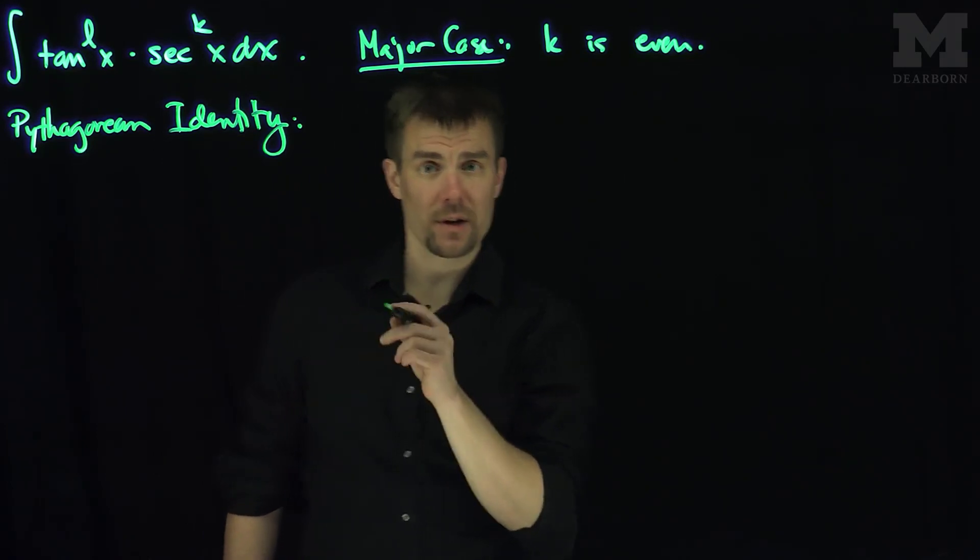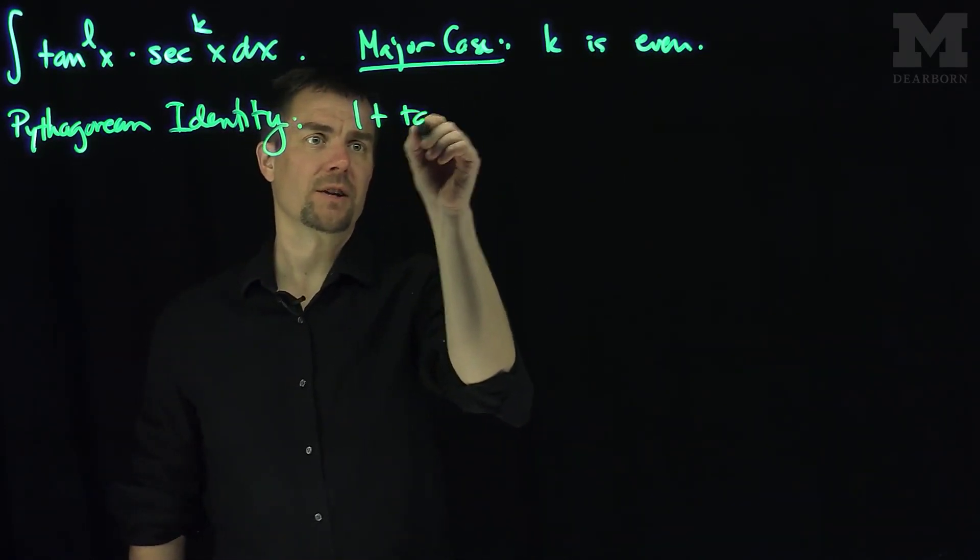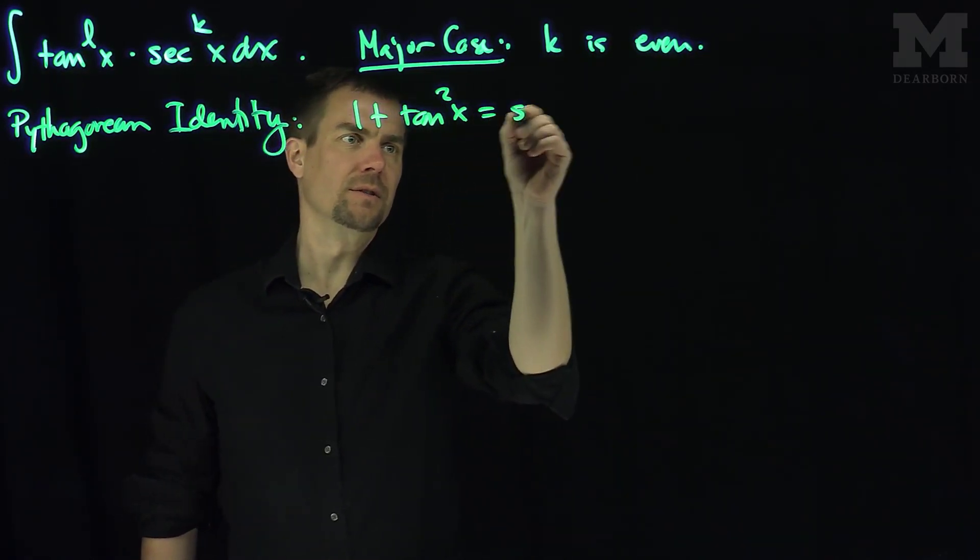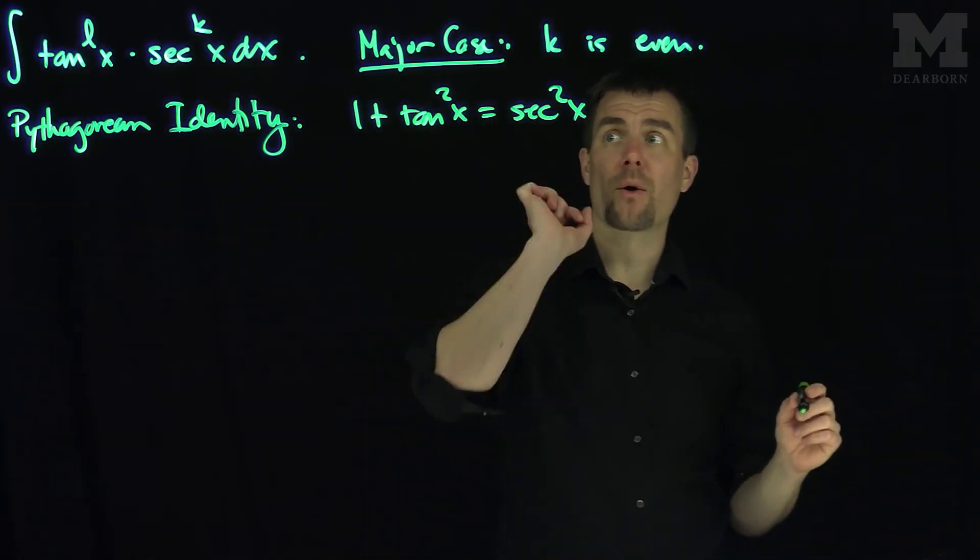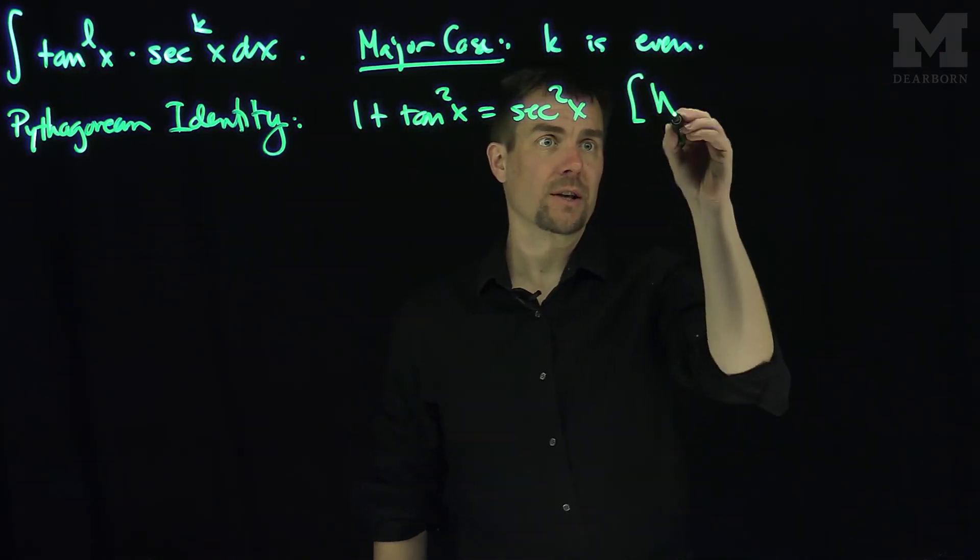Now, one plus tangent squared is secant squared. One plus tangent squared of x is secant squared of x. We use this identity when the power of secant is odd. We use this in this case.